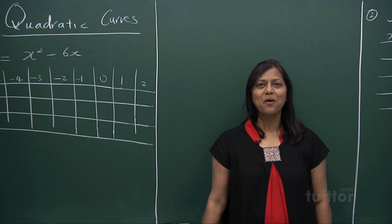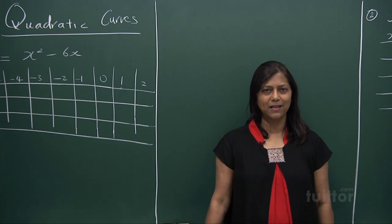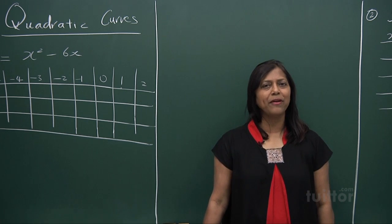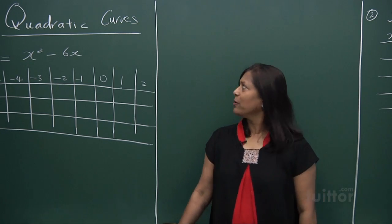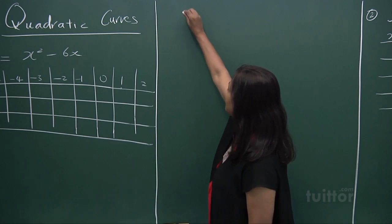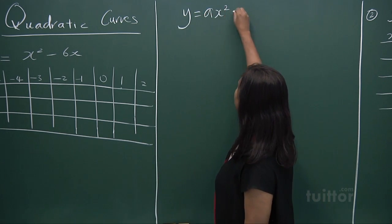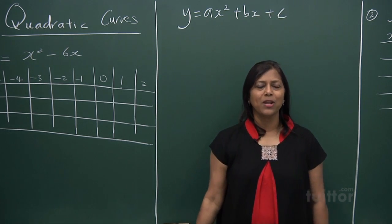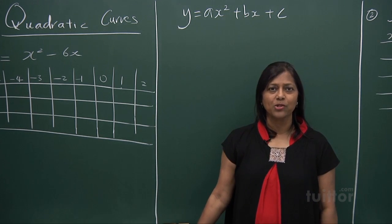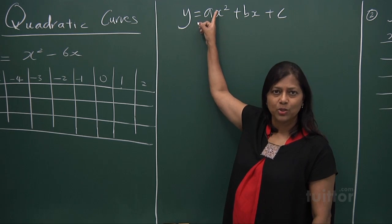We are now plotting graphs from linear to quadratic curves. How do we recognize a quadratic equation and what form does it take? A quadratic equation takes the form of ax squared plus bx plus c. You can see that the order of a quadratic equation is of order 2 — the power of x is 2.